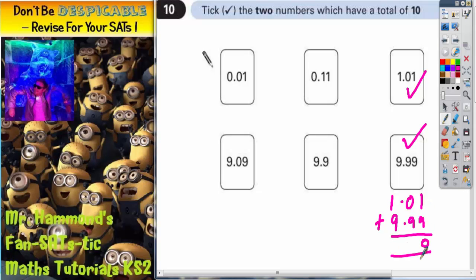1 plus 9 is 10, carry the 1. 0 plus 9 plus 1 is 10 again, carry the 1. 1 plus 9 is 10, plus that extra 1 that we carry is actually 11. And put your decimal point in, so actually these two make 11.